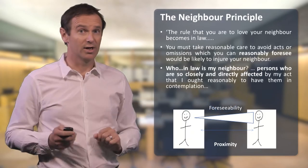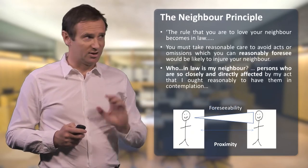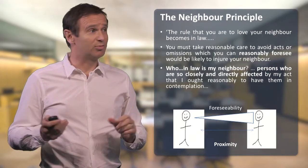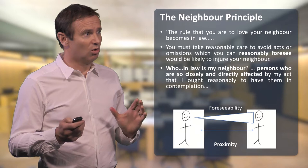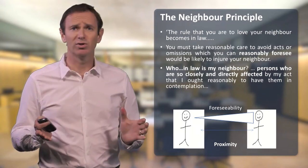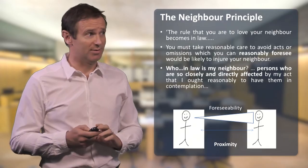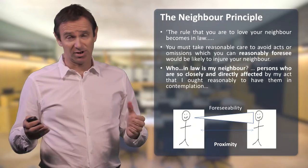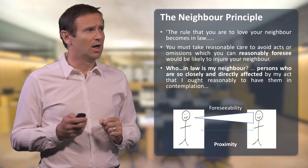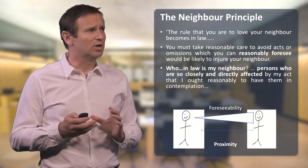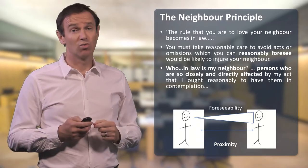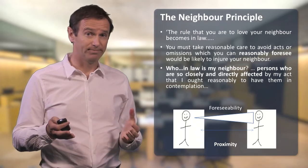What was Lord Atkin's neighbour principle? The rule, he said, that you are to love your neighbour — this is a religious principle — becomes in law: you must take reasonable care to avoid acts and omissions which you can reasonably foresee will be likely to injure your neighbour. He then asks the question: who in law is my neighbour? And the answer he gives: people who are so closely and directly affected by my actions that I ought reasonably to have them in contemplation.